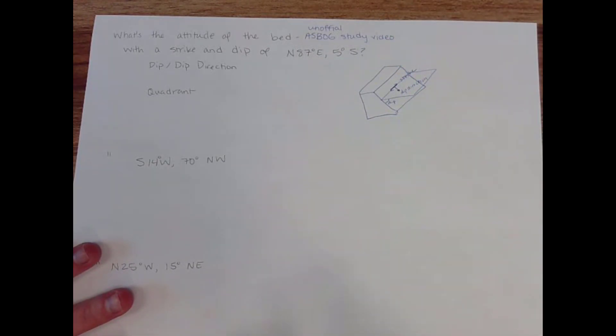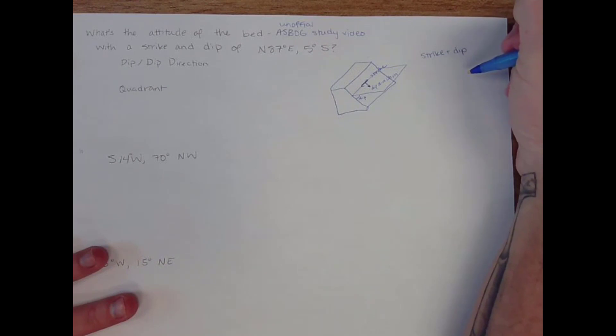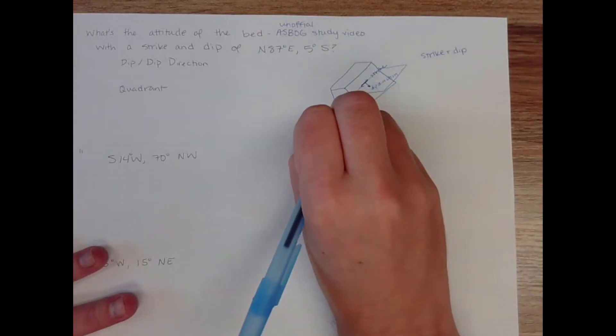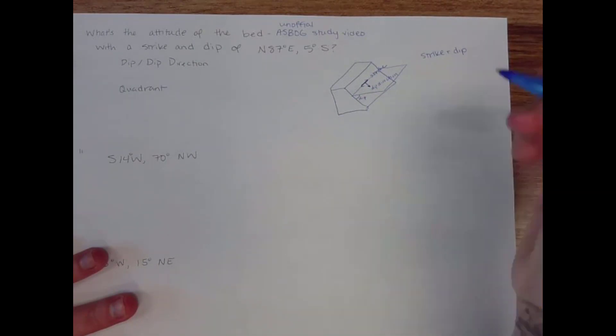So there are three ways that we write about the attitude of a bed. You can either use strike and dip. And within strike and dip, you can either apply the right hand rule or not apply the right hand rule. If you do apply the right hand rule, then dip direction is not included as part of your strike and dip. It's just assumed that if you looked along the direction of strike, the plane would fall off or dip down to your right. That's what the right hand rule means.